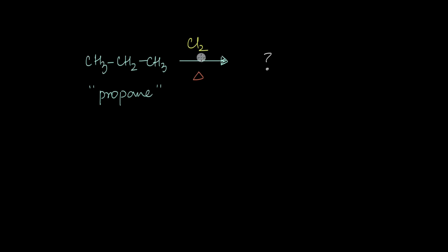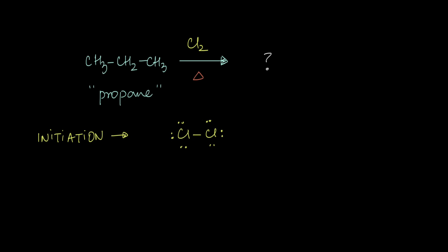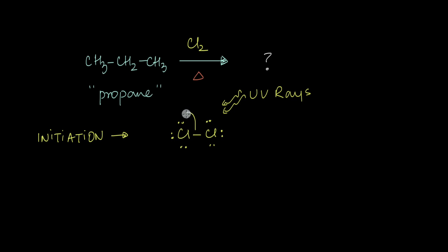Let us now see what happens if I add chlorine to propane instead of methane and heat the mixture up. What kind of product or products will we get in this scenario? As you've seen in the previous video, this kind of reaction starts with an initiation step in which a few chlorine molecules, in the presence of heat or even UV rays, break apart.